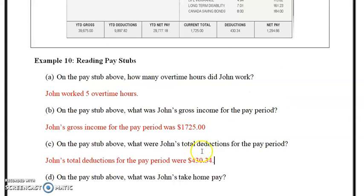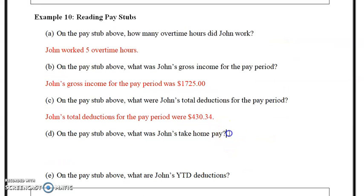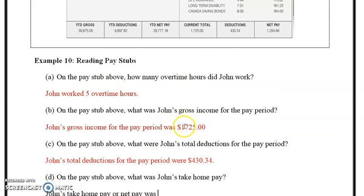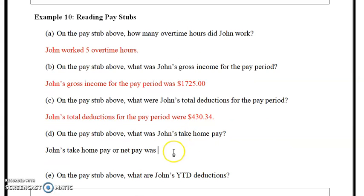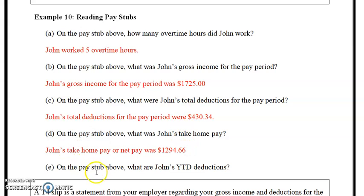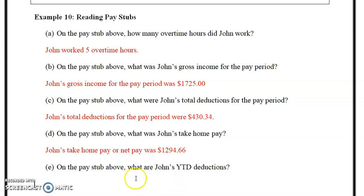On the pay stub above, what was John's take-home pay? That's the net pay, which is $1,294.66. John's take-home or net pay was $1,294.66.